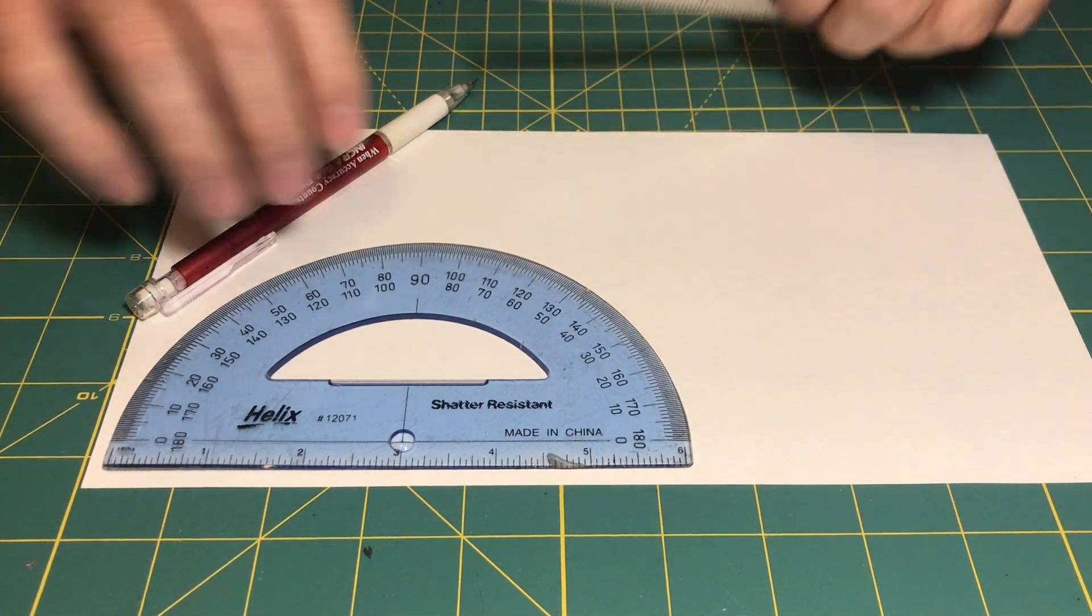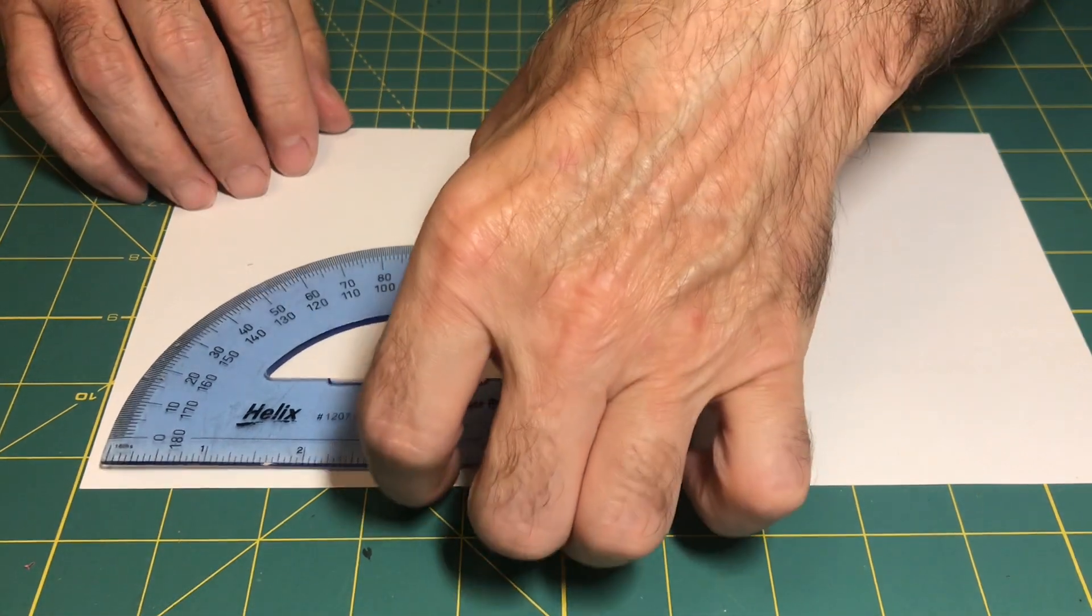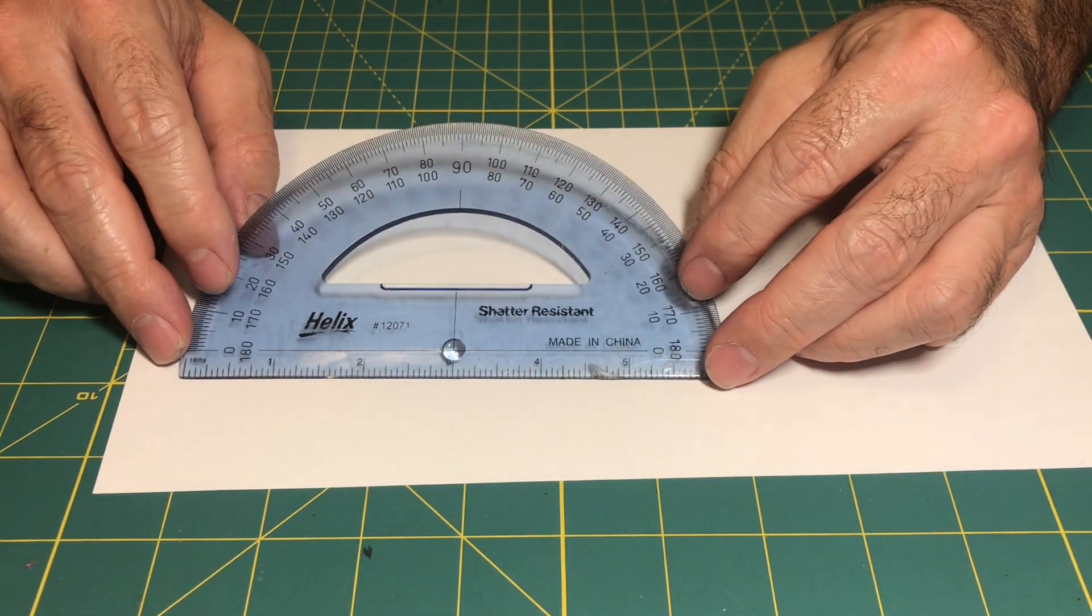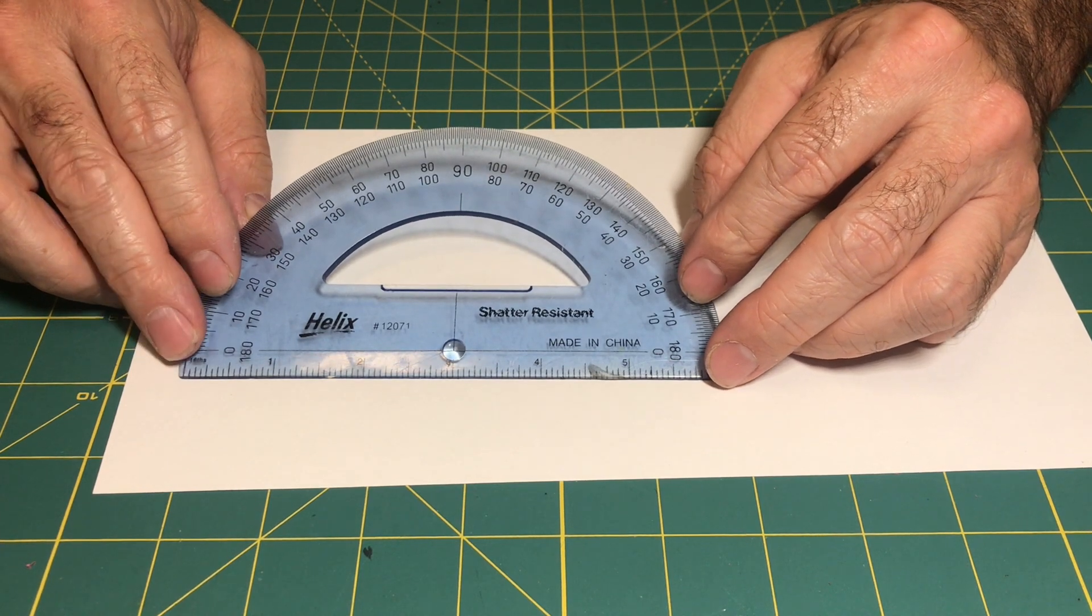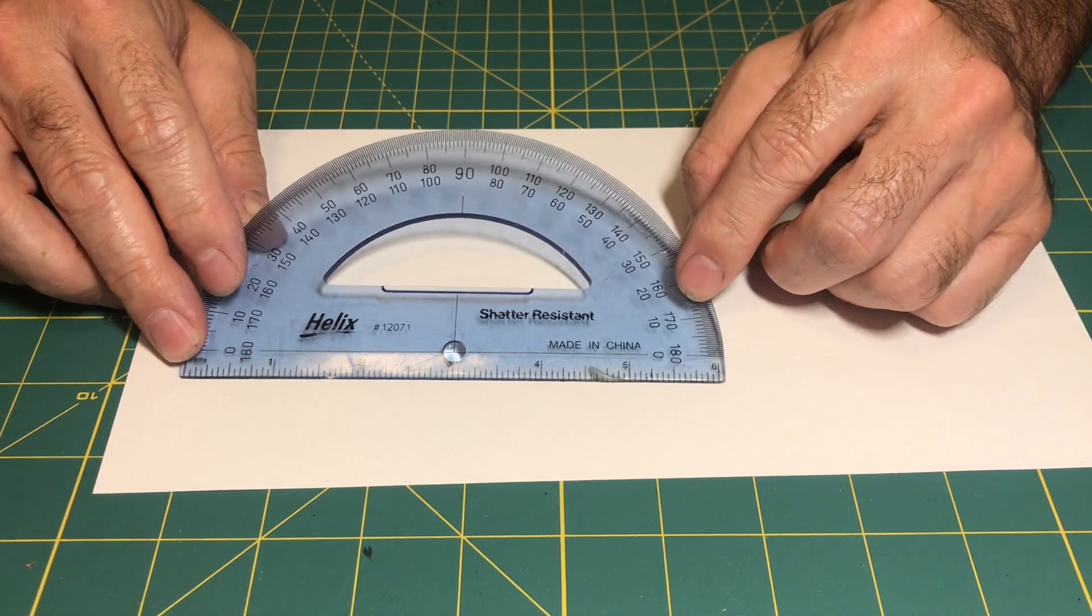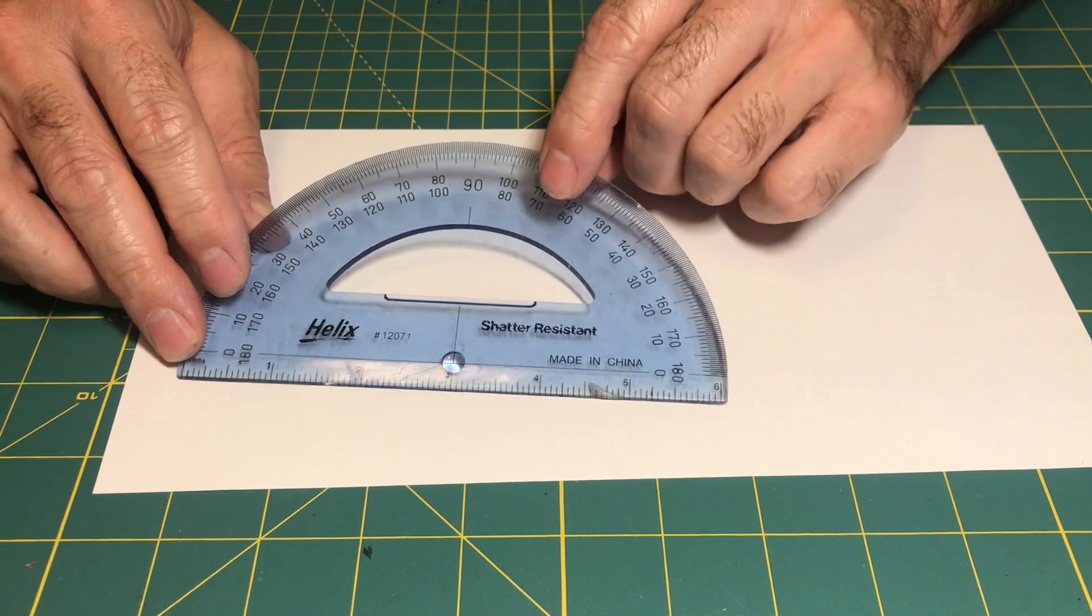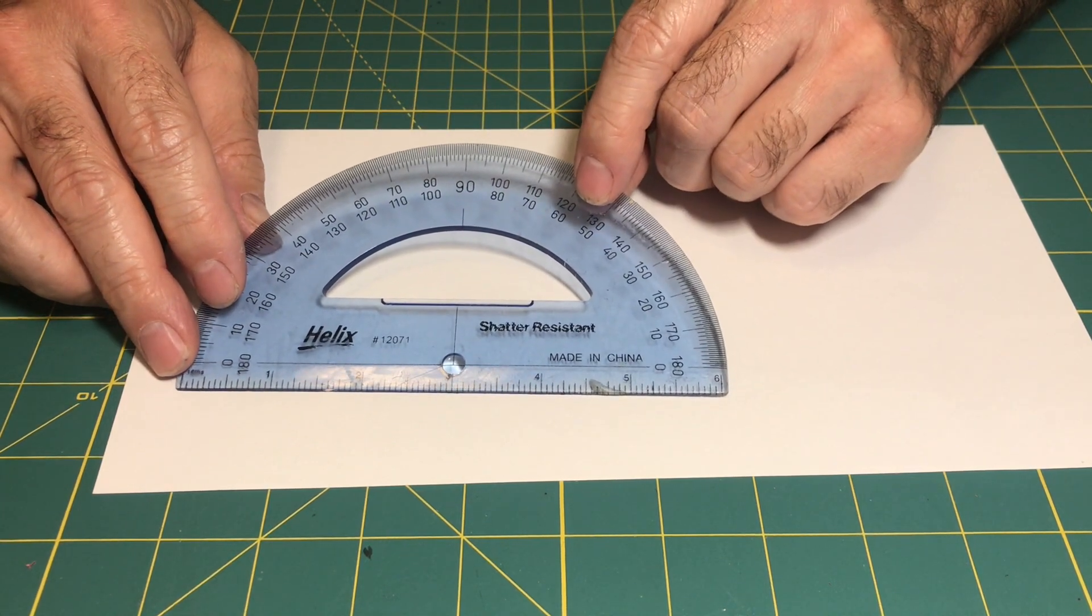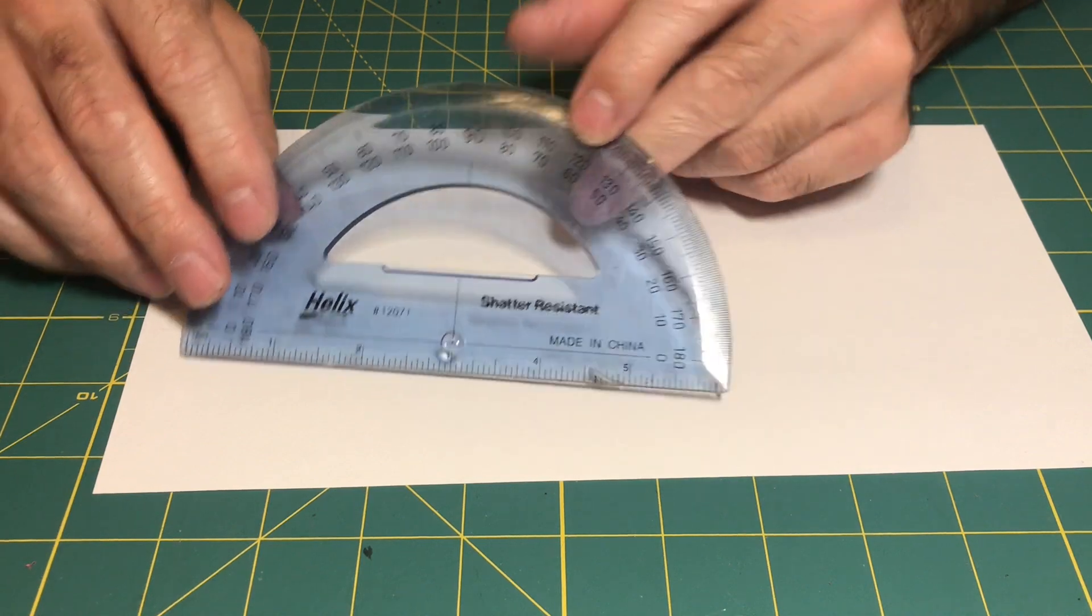This differs from other methods in that you use a tool with degrees on it called a protractor. This is not a very accurate one. It's not very easy to read as it's dirty and a little bit dark, so it's kind of hard for me to read this, but I will try it anyway.